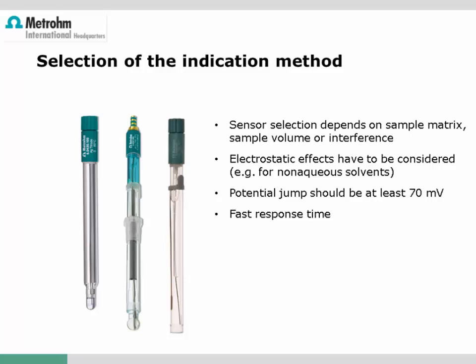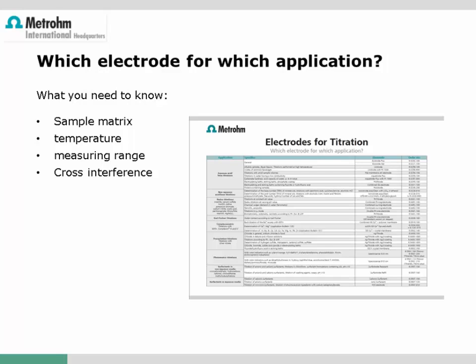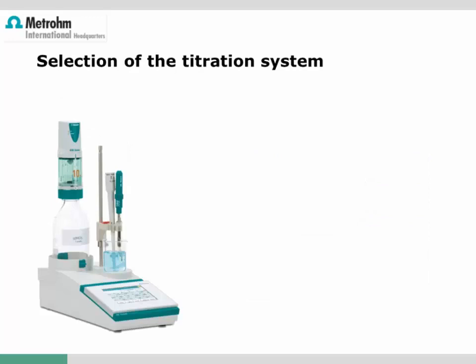The response time of the sensor is also very important — the sensor must be fast enough to follow the course of the titration without delay. The sensor must also be very rugged, resistant to chemicals, and robust enough for manual handling like cleaning and electrode preparation. Since there is a wide variety of electrodes available, we recommend consulting the manufacturer's literature on electrode selection. Only little information about the sample matrix, temperature, measuring range, and possible contamination is necessary to find the best electrode for your application.